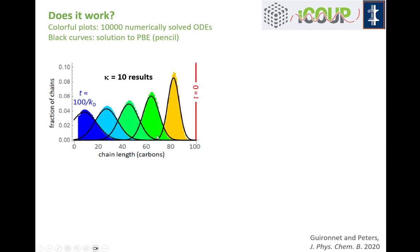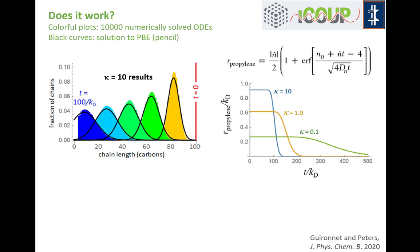Does it work? You can solve that Fokker-Planck equation by hand and get these black curves, which coincide quite closely with the numerical solutions of the ODEs describing the evolution of each individual species. You can use the Fokker-Planck solutions to analytically calculate the rate at which the system makes propylene, getting a nice compact expression with only a couple of parameters.